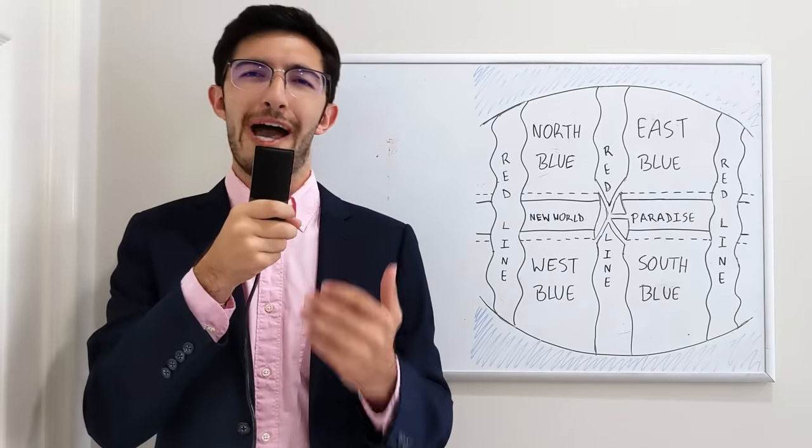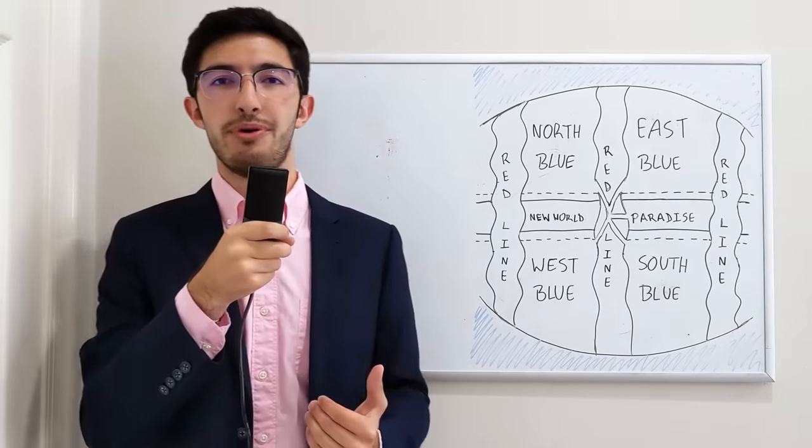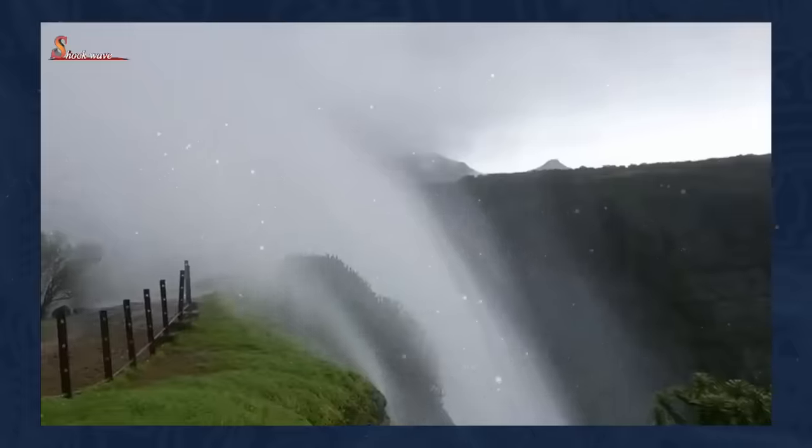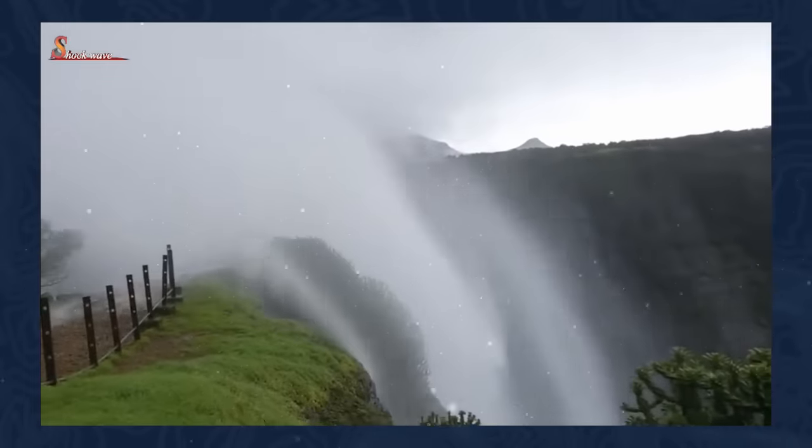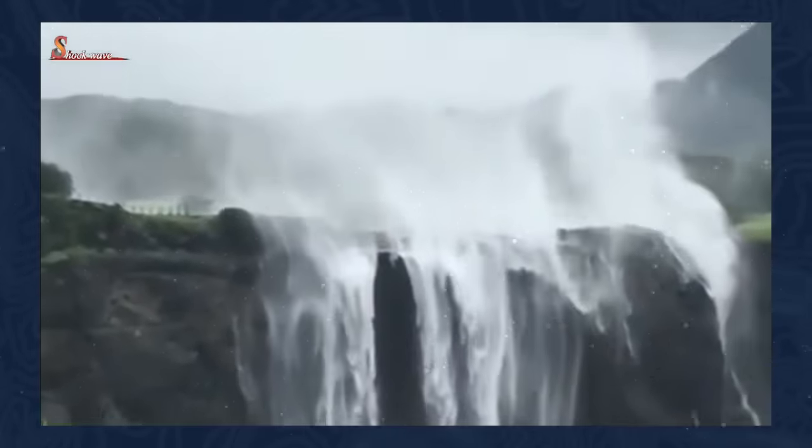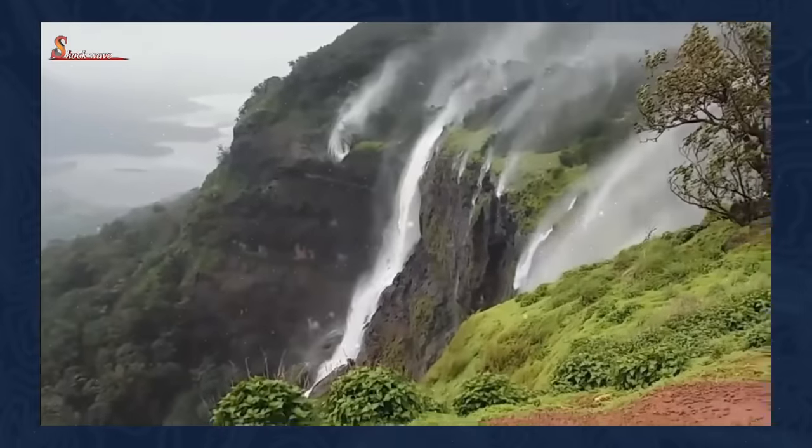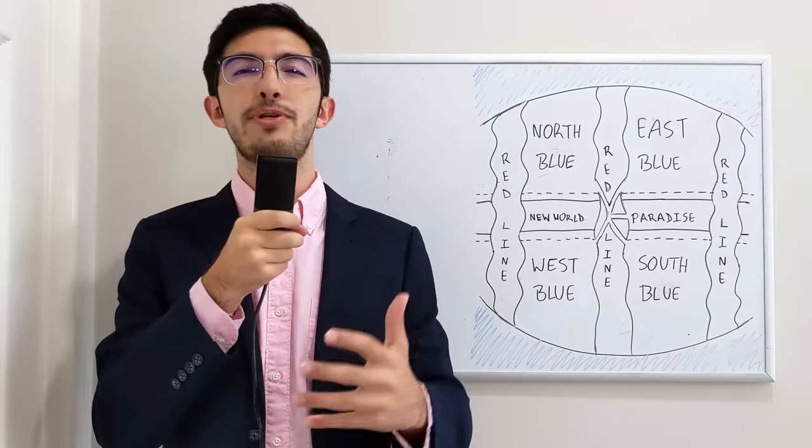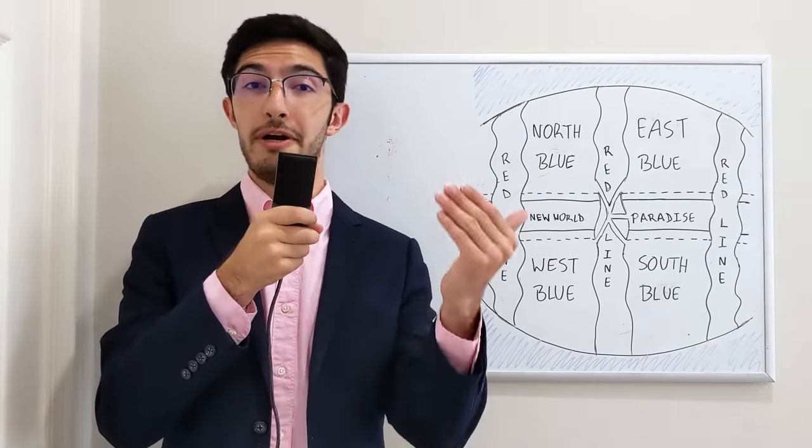But interestingly enough, reverse waterfalls do actually exist in our own world, although not in the way that you might imagine. In a very few specific parts of the world, you have these upside down waterfalls that essentially function like normal waterfalls, but are counteracted by super, super strong wind gusts and currents of wind that actually blow the water back over so that it creates a sort of optical illusion that makes it look as though the waterfall is actually going up in the air.